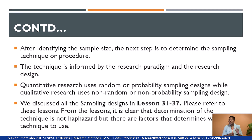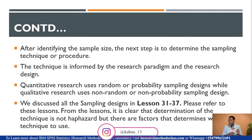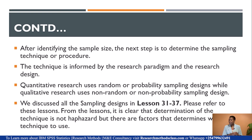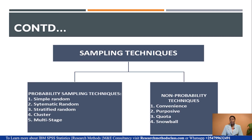Determination of the sampling technique is not haphazard — you don't simply decide to use Simple Random, Convenience, or Snowball. It is informed by the problem, the paradigm, and the design you have anchored your study on. We have five probability sampling techniques: Simple Random, Systematic, Stratified, Cluster, and Multi-Stage. We have four non-probability sampling techniques: Convenience, Purposive, Quota, and Snowball. If you have a mixed method, then you borrow from both probability and non-probability sampling techniques.